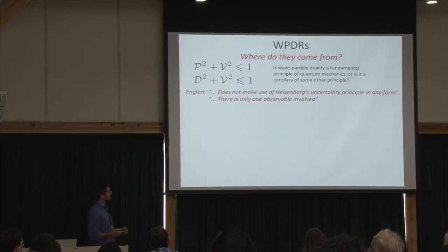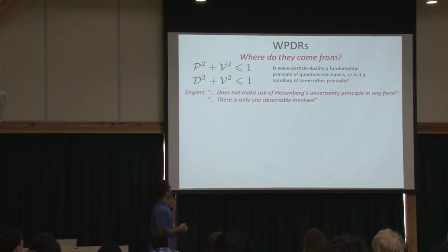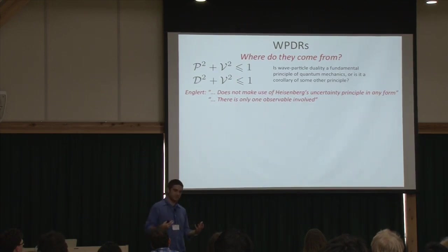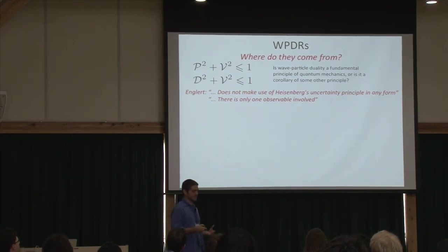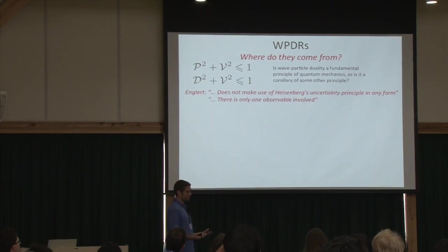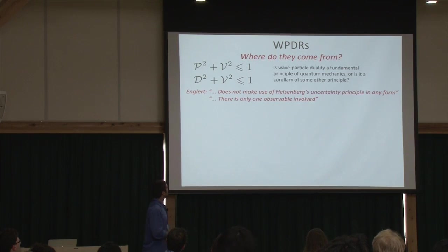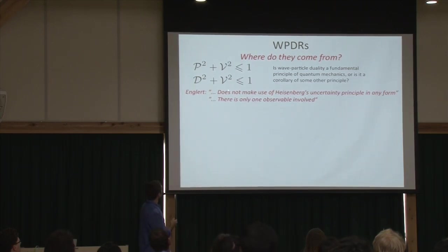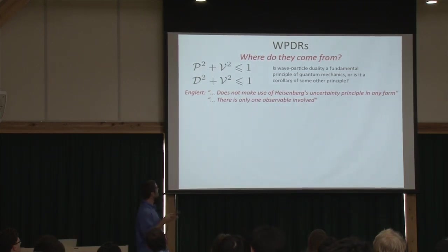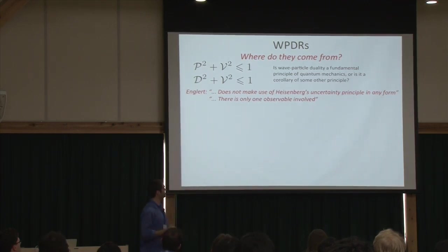The topic of my talk is: where do these relations come from? Should we accept them as a fundamental axiom of quantum physics, or should we think of them as a corollary of some other, perhaps more basic principle? One might guess they are somewhat related to the uncertainty principle, but Englert noted in his original paper that his derivation does not make use of Heisenberg's uncertainty principle in any form. Furthermore, he remarked that there's only one observable involved in the trade-offs — the path observable.